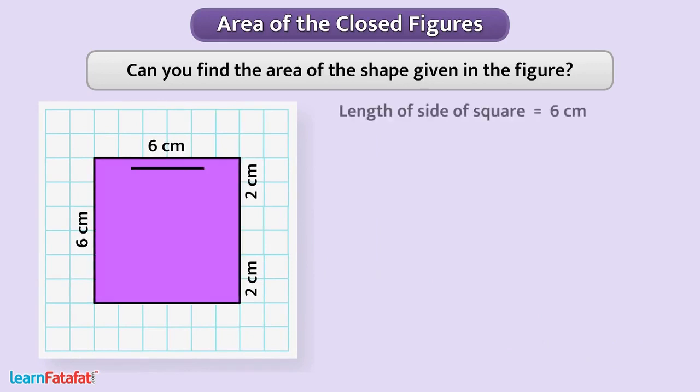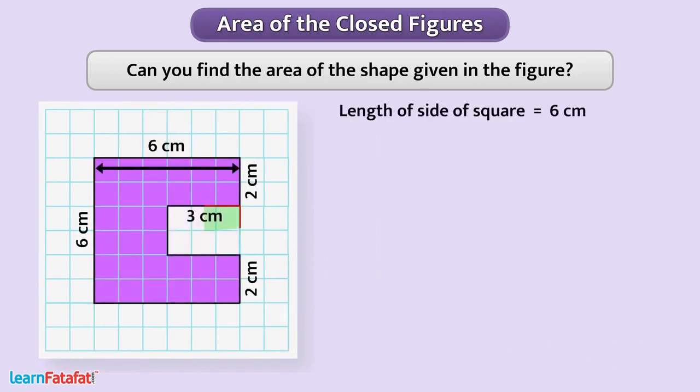This is square whose side is 6 centimeter. A rectangular part appears to be removed from it. The length of the rectangular part is 3 centimeter. What could be its breadth? Think about it.